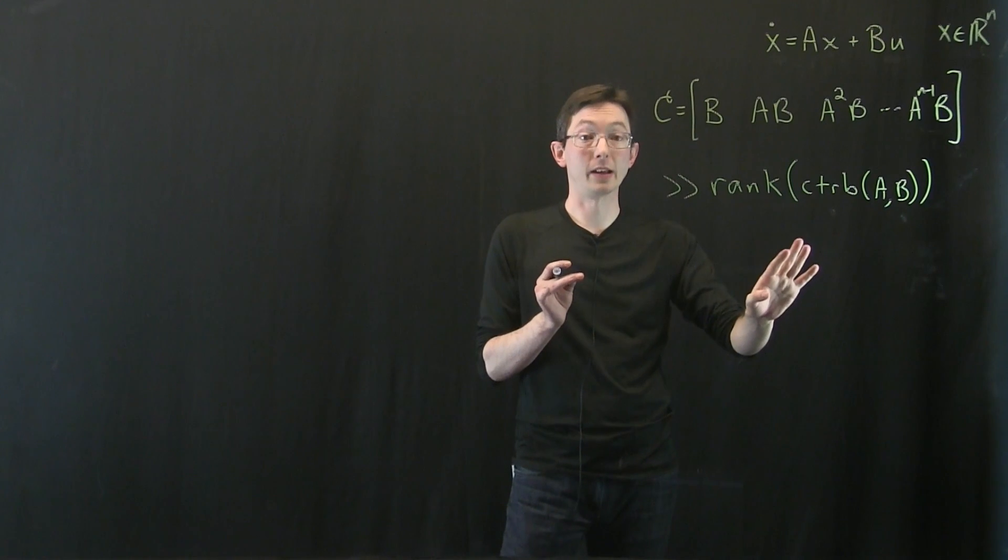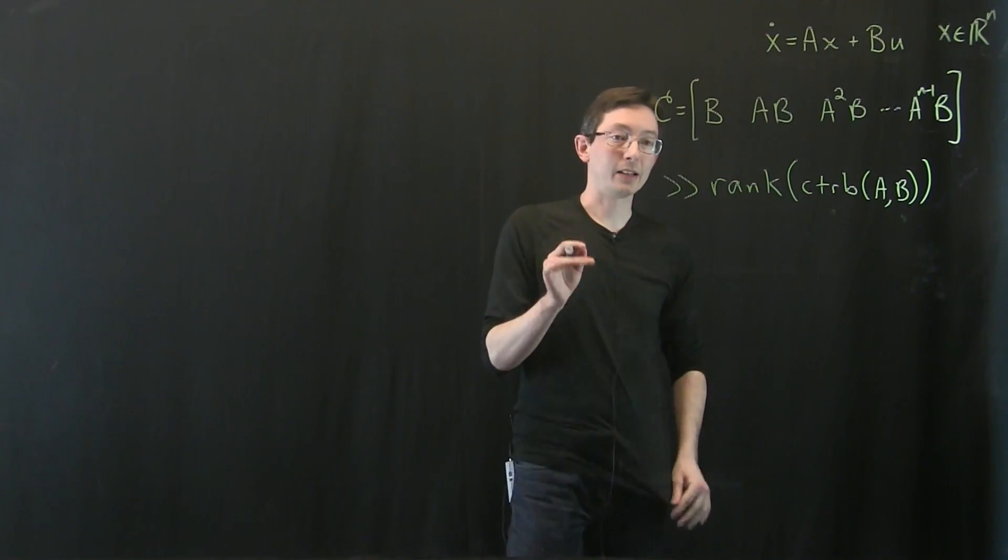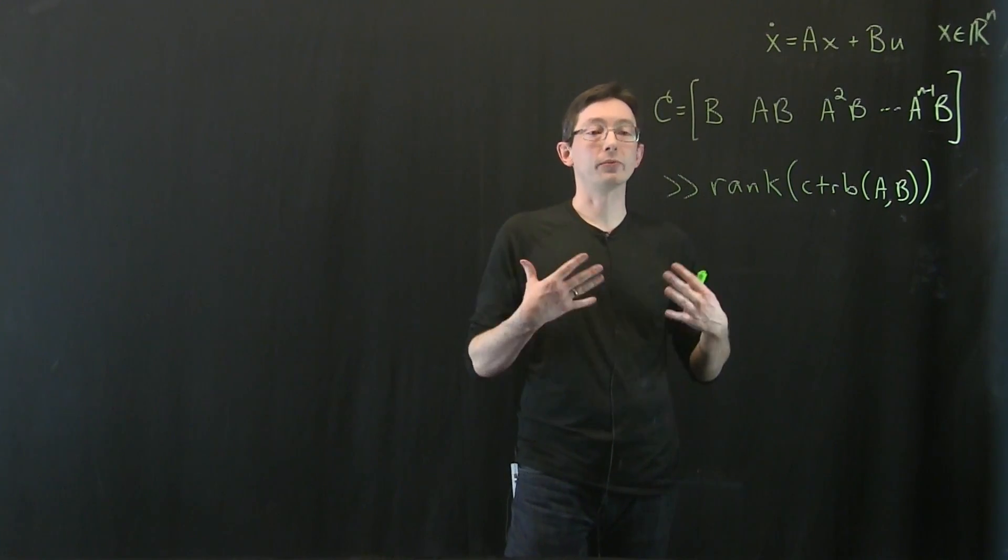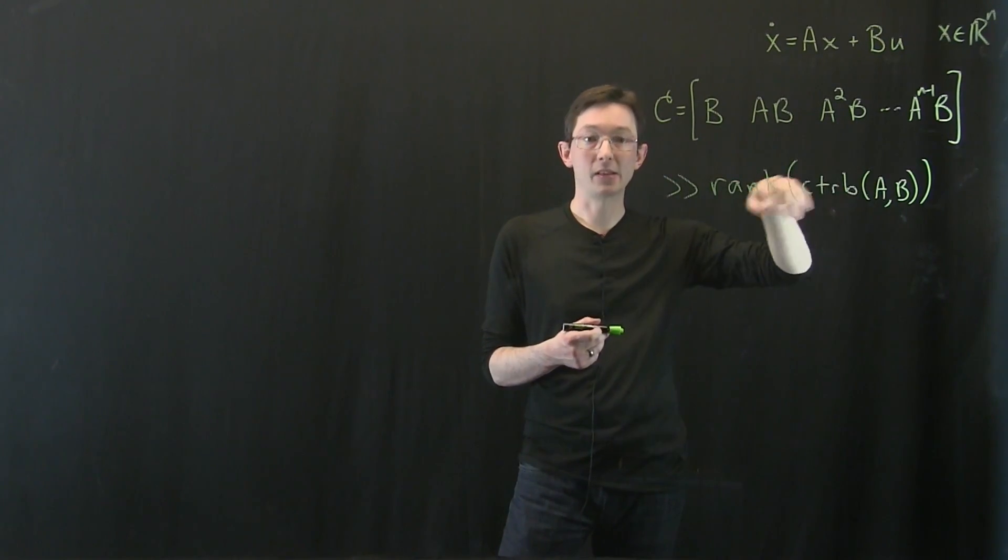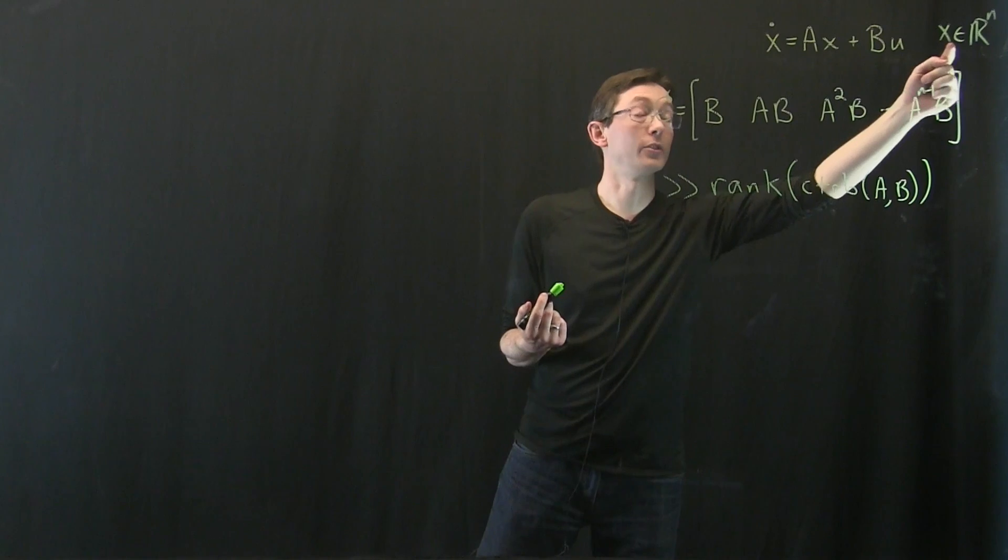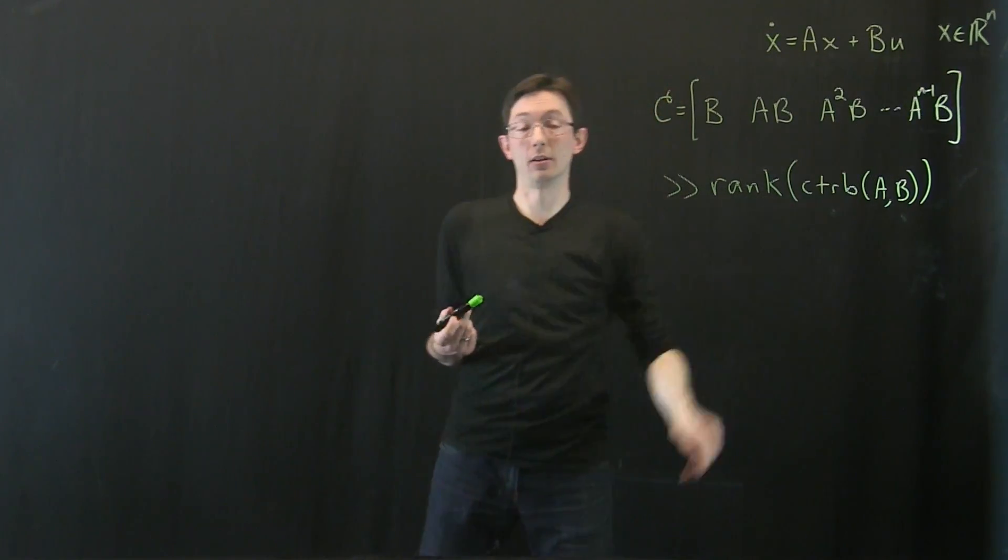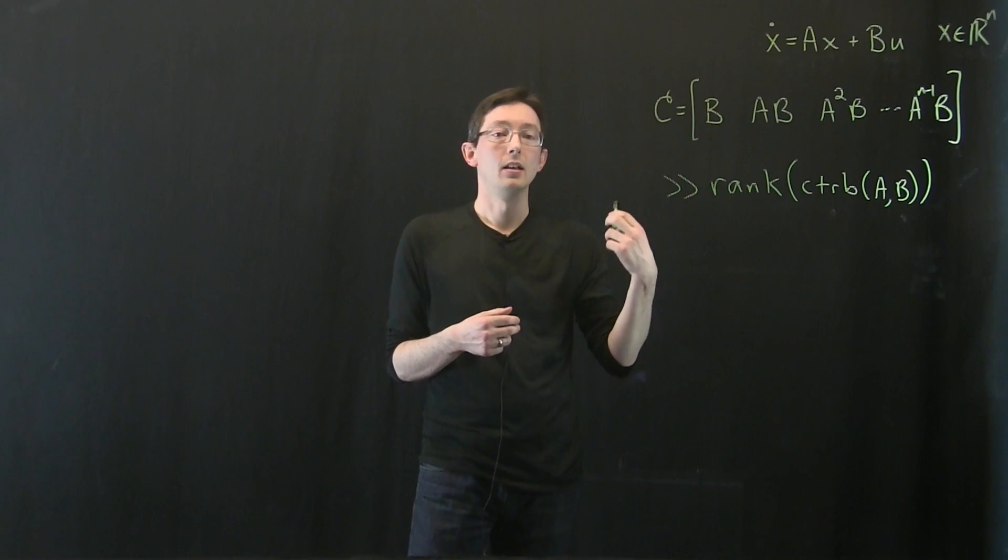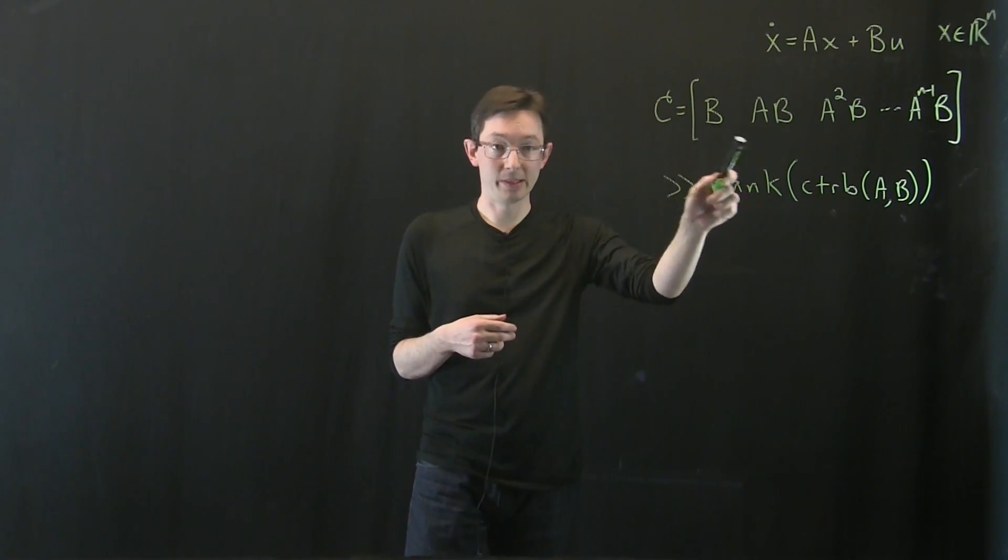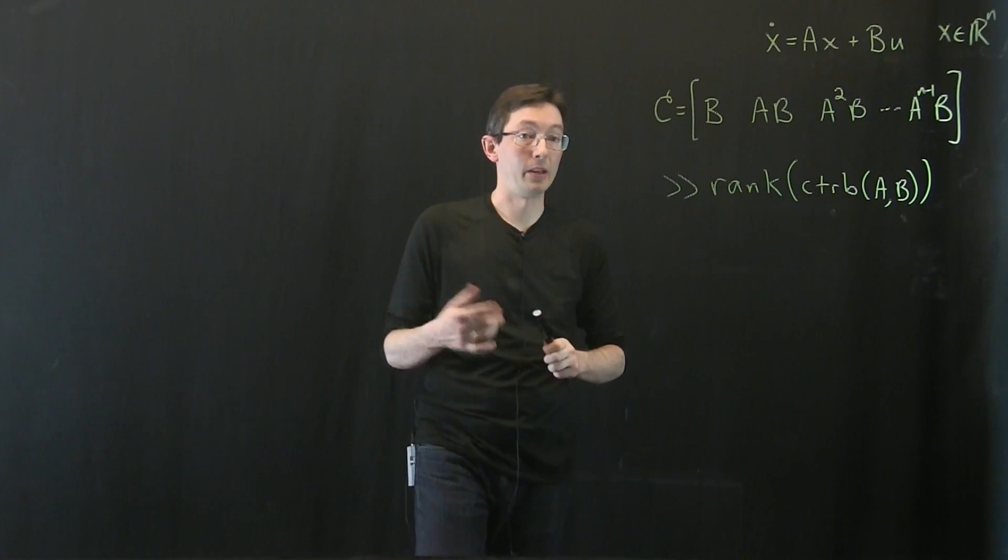But in practice, there are much richer and more useful measures of controllability, so how controllable are different directions in Rn. And we can get those by looking at things like the singular value decomposition of this matrix or something called the controllability Gramian.